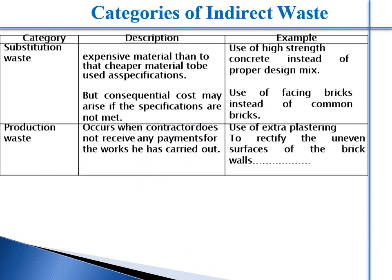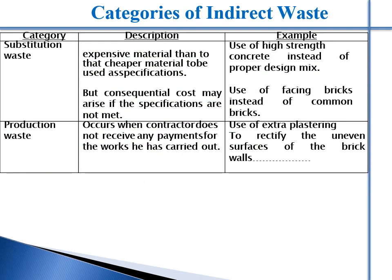The table explains the categories of indirect waste. Substitution waste: Using expensive material even though cheaper materials are available as per specifications. Consequent costs may arise if specifications are not properly made.